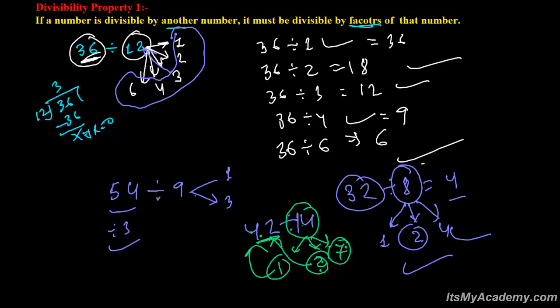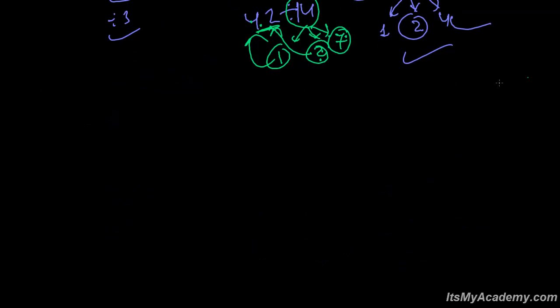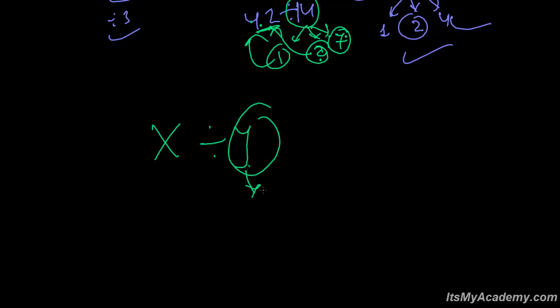So the property is saying: if any number X is divisible by Y, then it is also divisible by the factors of Y.